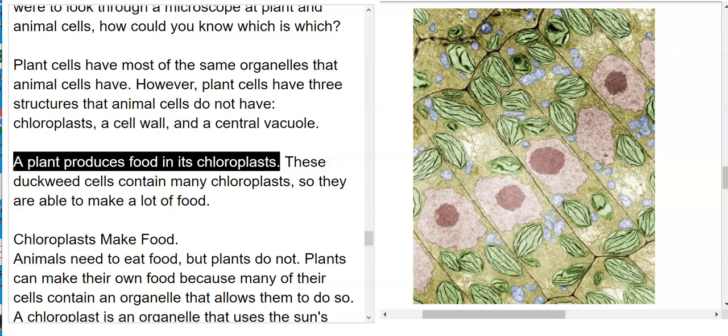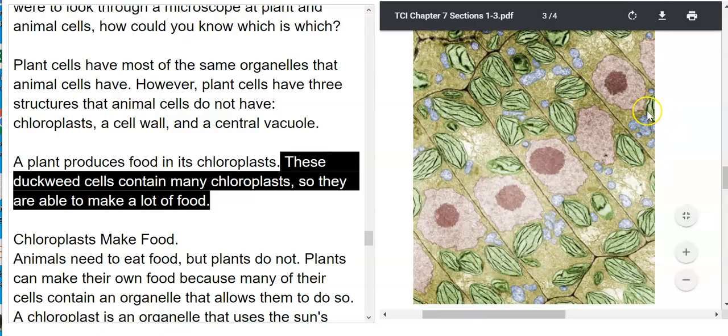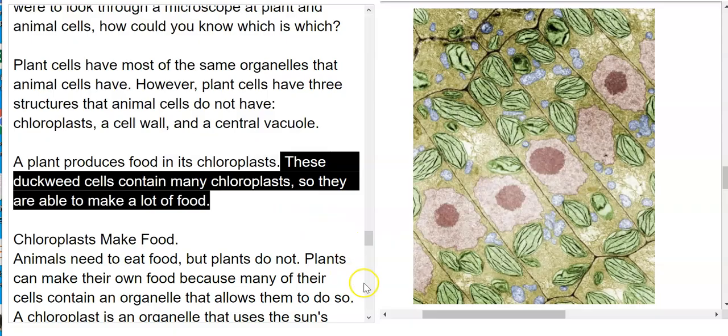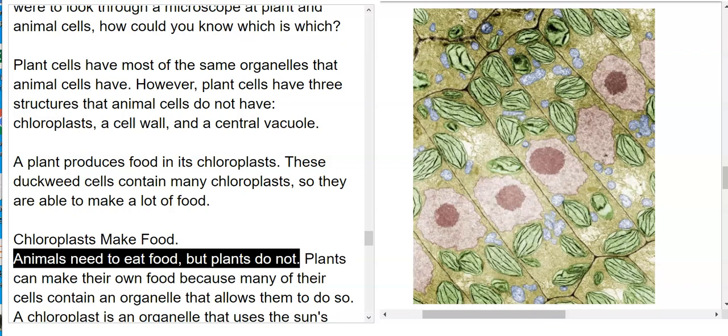A plant produces food in its chloroplasts. These duckweed cells contain many chloroplasts, so they are able to make a lot of food.